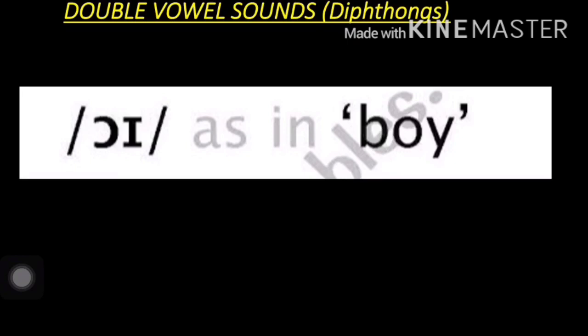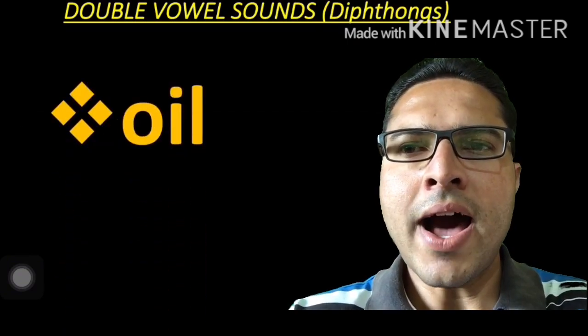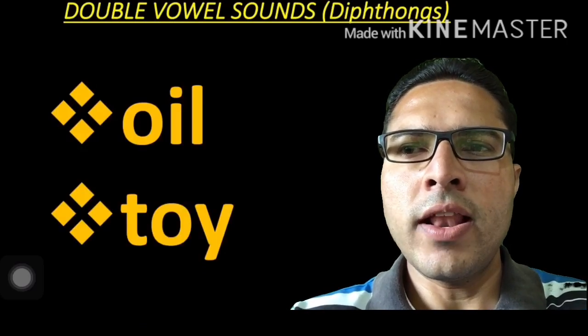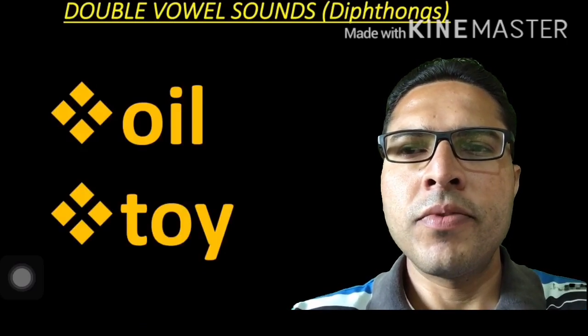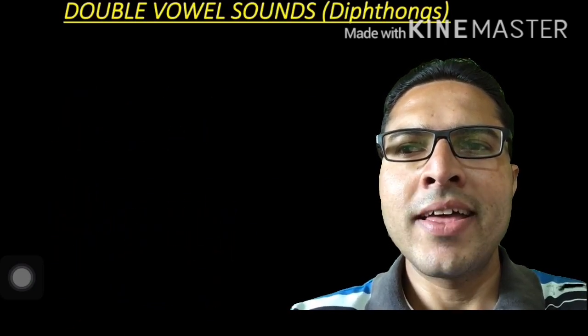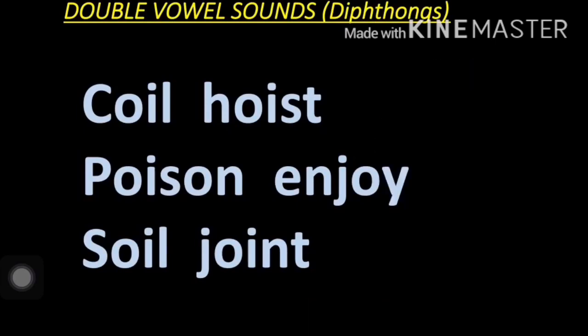The fifth diphthong is /ɔɪ/, as in 'boy'. Examples: O-I-L, oil; T-O-Y, toy. More words: coil, hoist, poison, enjoy, soil, joint.